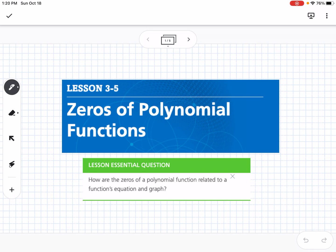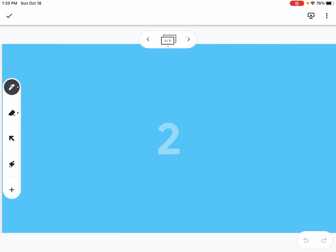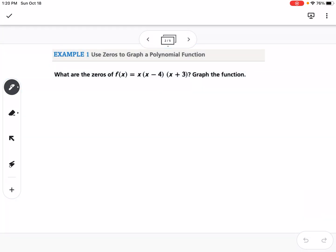So, this is lesson 3-5, which is zeros of polynomial functions. Our essential question is, how are the zeros of a polynomial function related to a function's equation and graph?